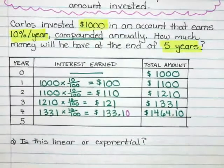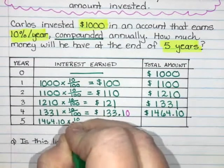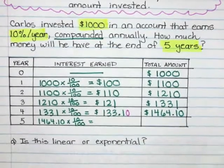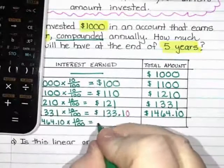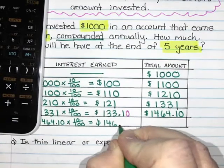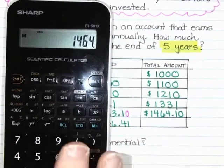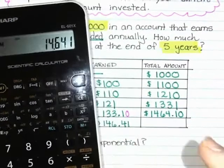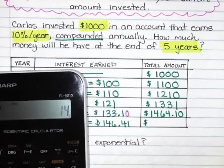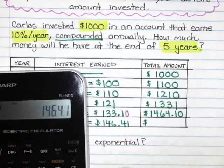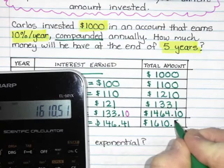We have one more row. This is a lot more work than simple interest. So $1,464.10 times 10% — multiply by 10, divide by 100 — gives $146.41 in interest. Adding $146.41 to $1,464.10 gives $1,610.51.